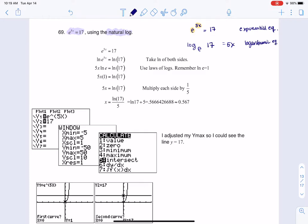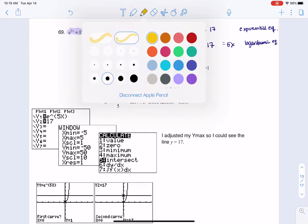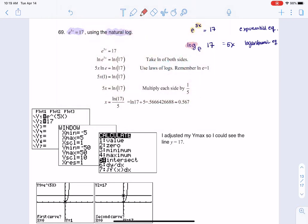And what we want to recognize going through here is that whenever you see log base e, that is the natural log happening. So I know that the natural log of 17 is equal to 5x.